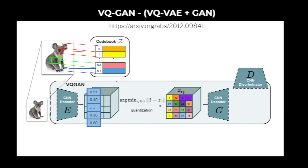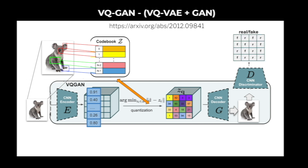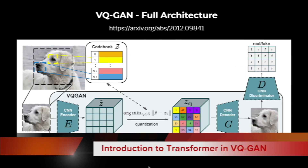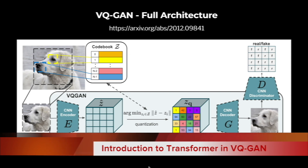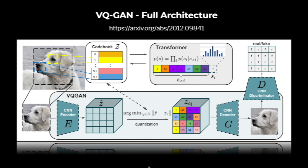For example, features of a koala — ears, eyes, nose, paws, legs — are identified and stored into the codebook. To generate an output image of a koala, the features are extracted from the codebook and the CNN decoder uses those features to build the image. That image is then sent to the CNN discriminator, which flags it as real or fake. This completes the process of generating images matching the source data through VQGAN.